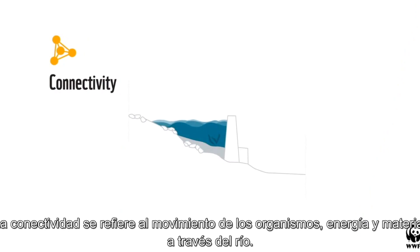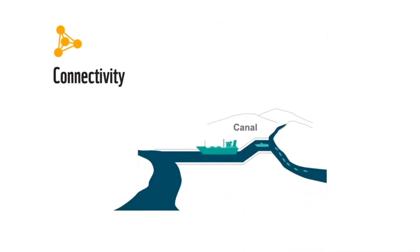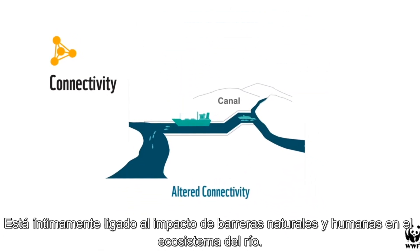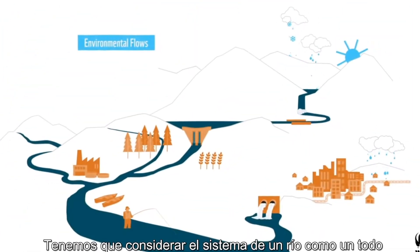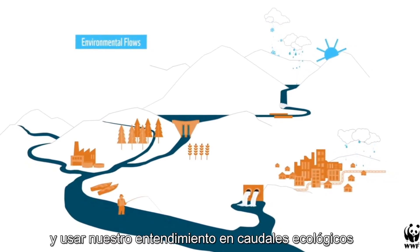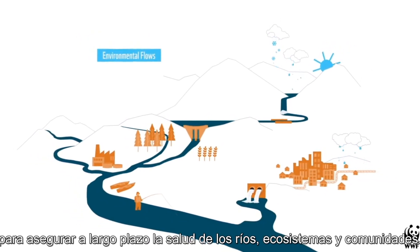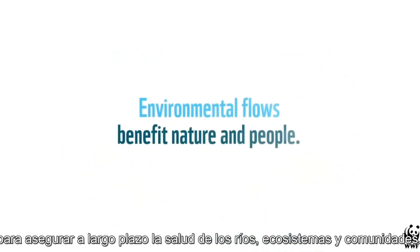Connectivity refers to the movement of organisms, energy and matter through a river system. It is intimately linked with impacts that natural and man-made barriers have on a river system. We need to consider river systems as a whole and use our understanding of environmental flows to ensure the long-term health of our rivers, ecosystems and communities.